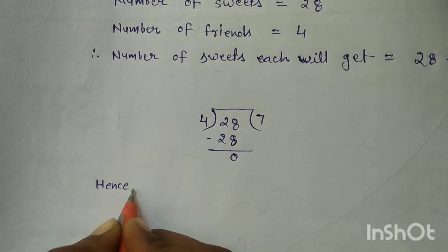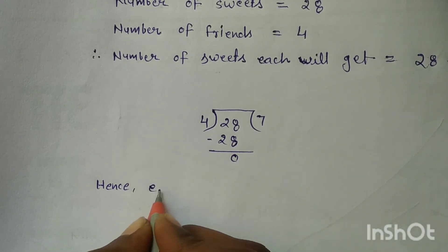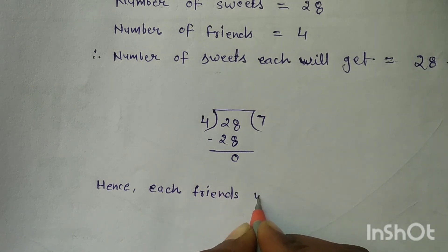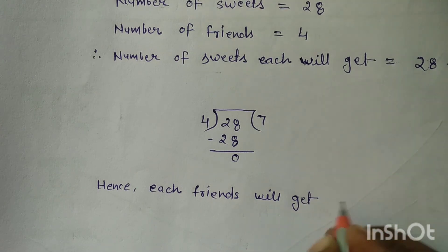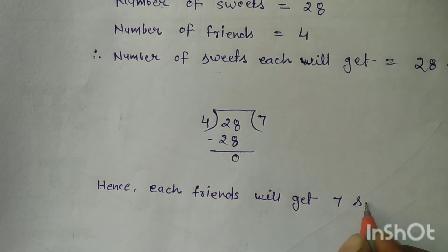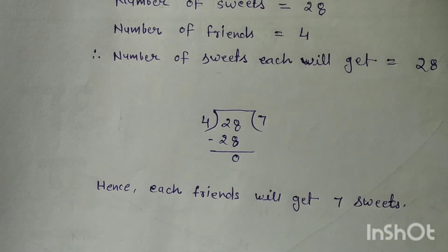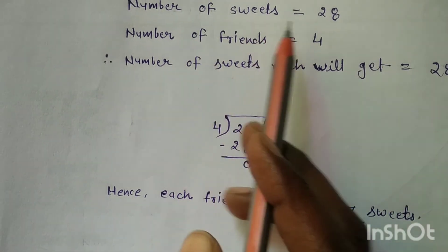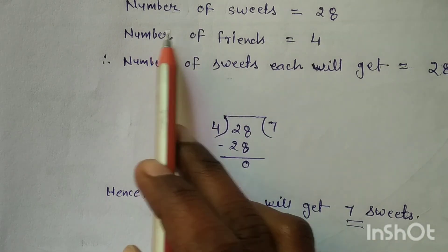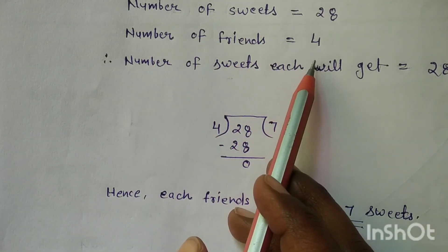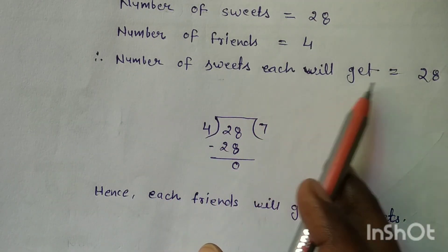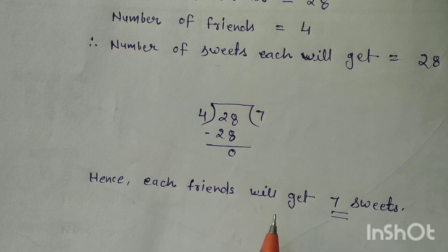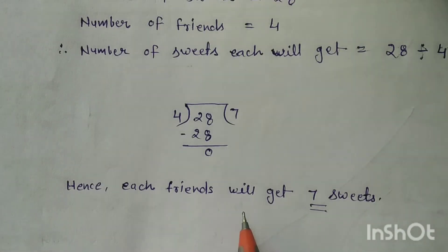Hence, each friend will get 7 sweets. So one friend will get 7 sweets. Thank you children.